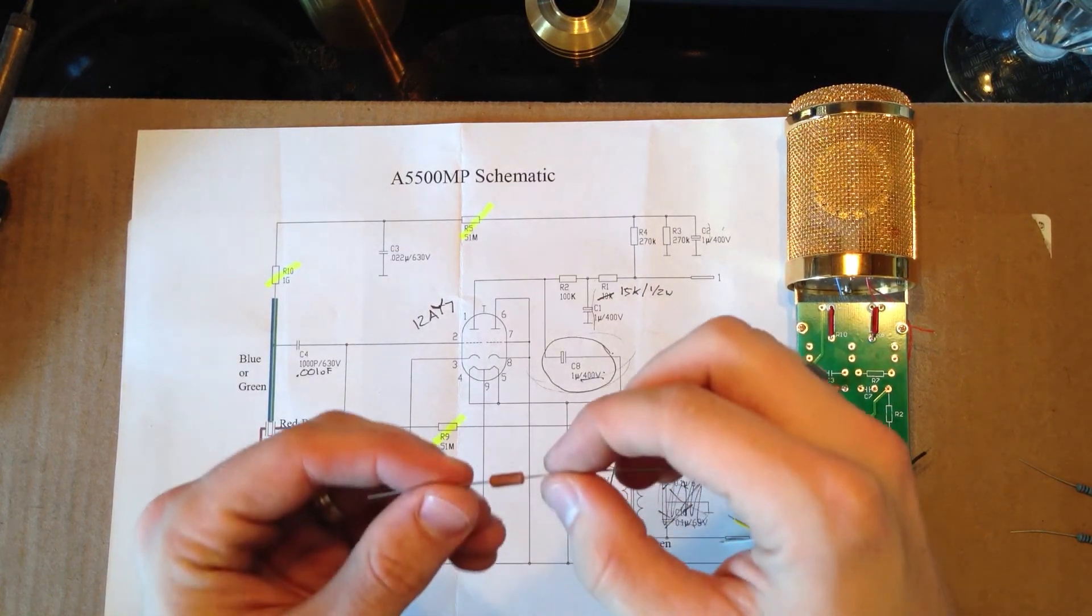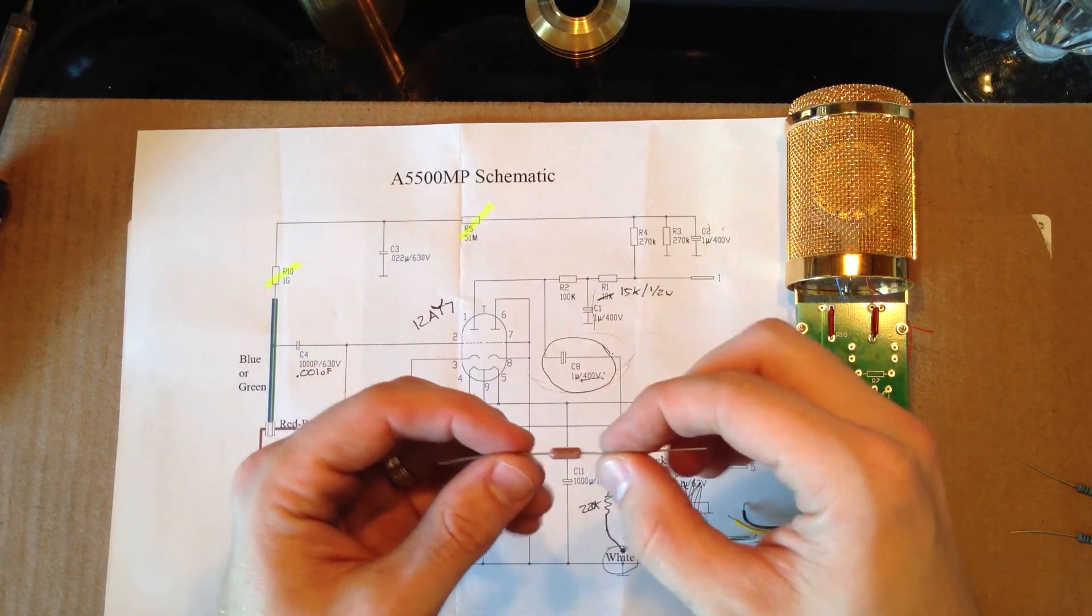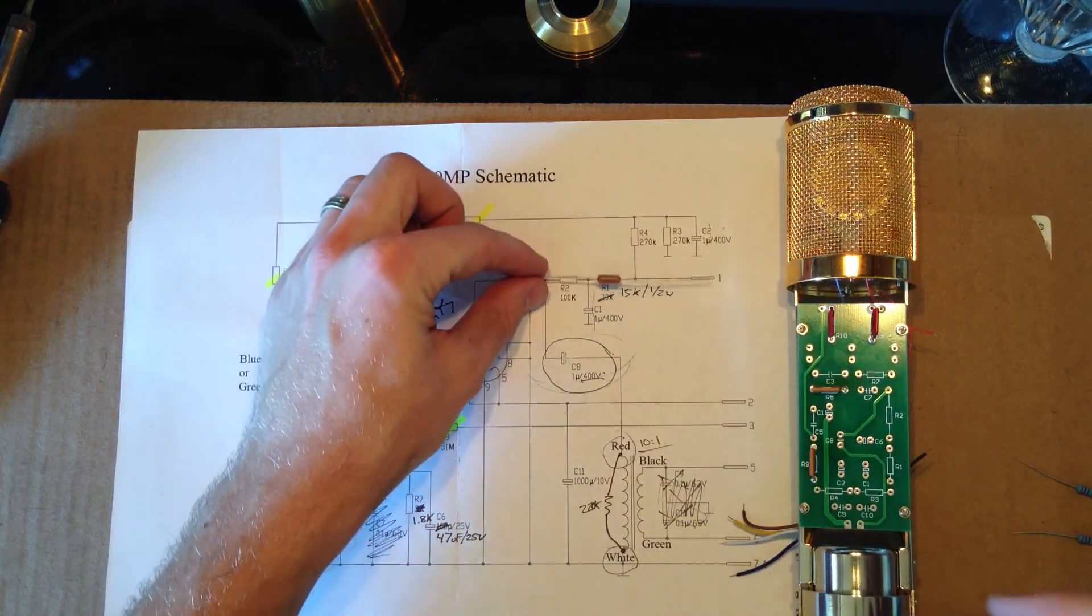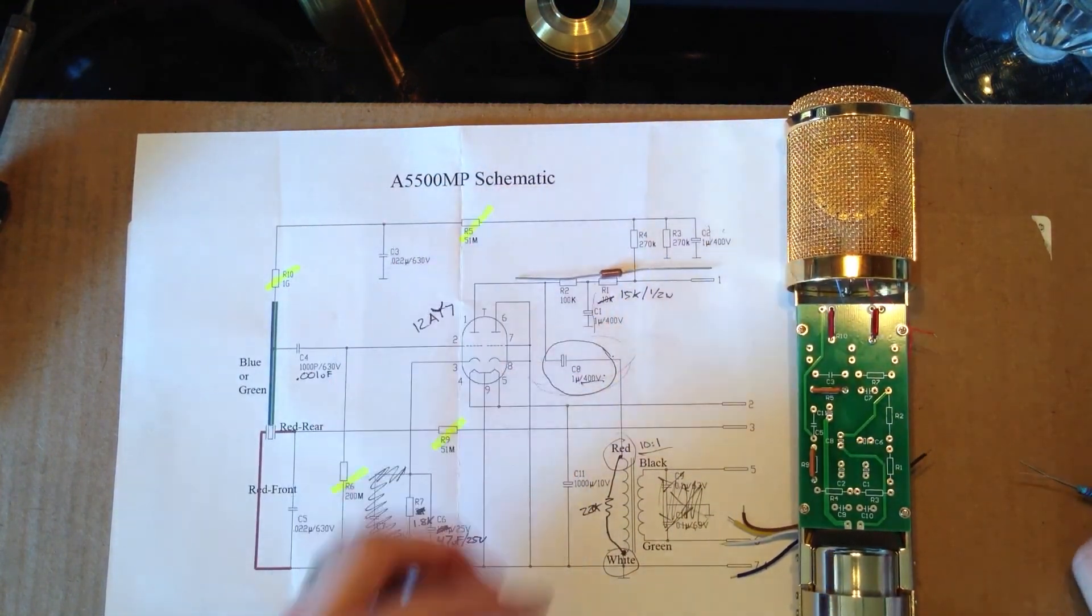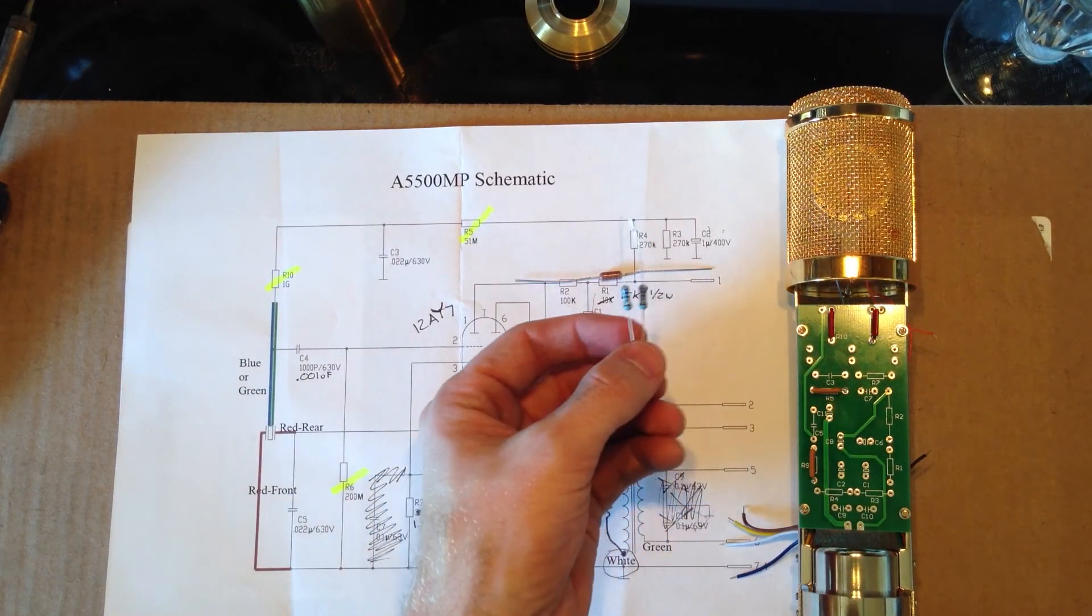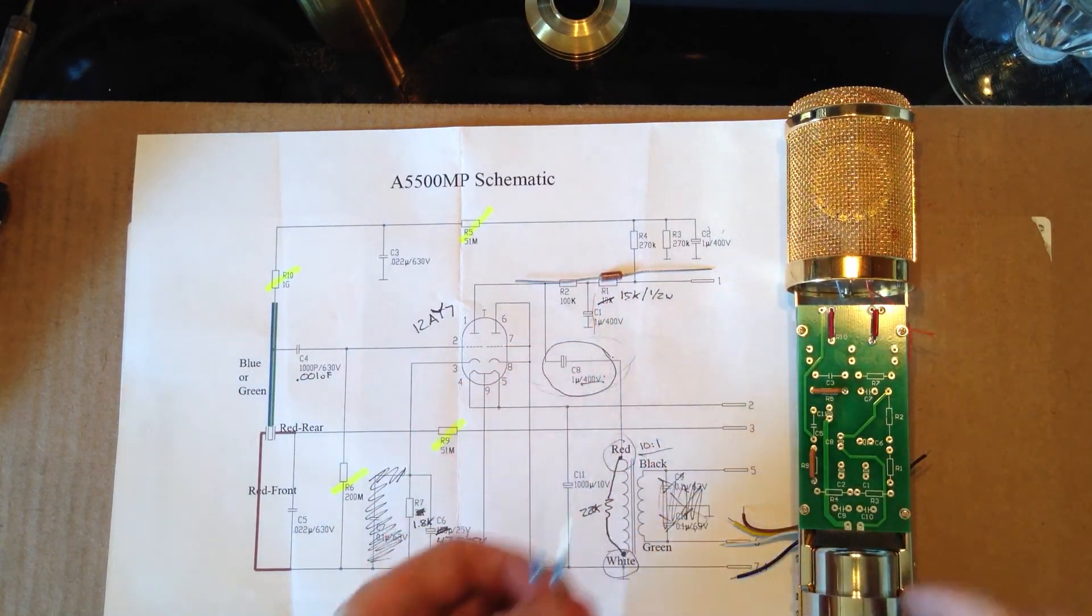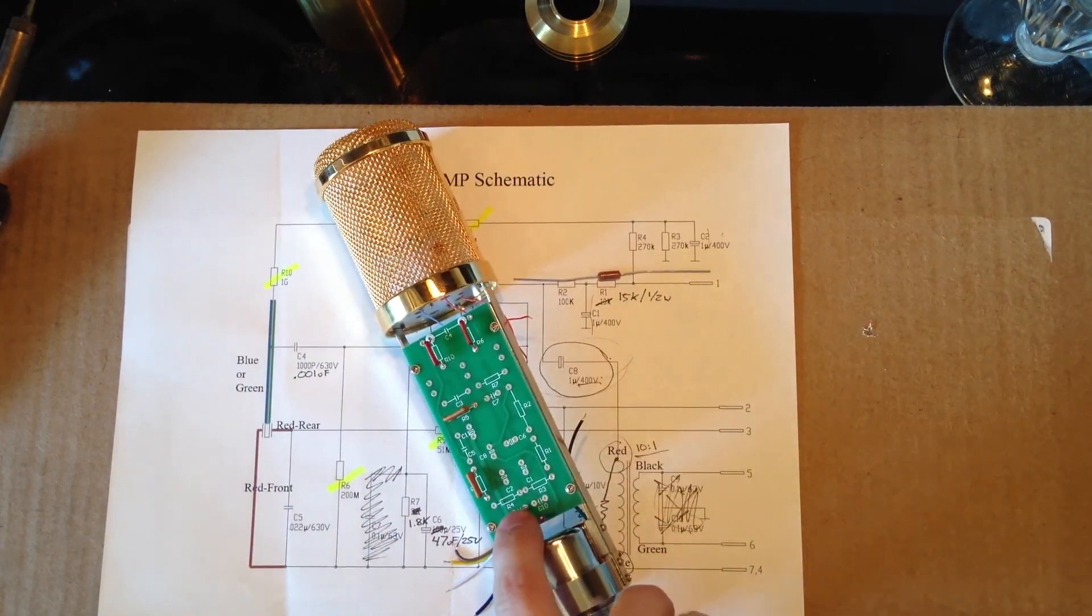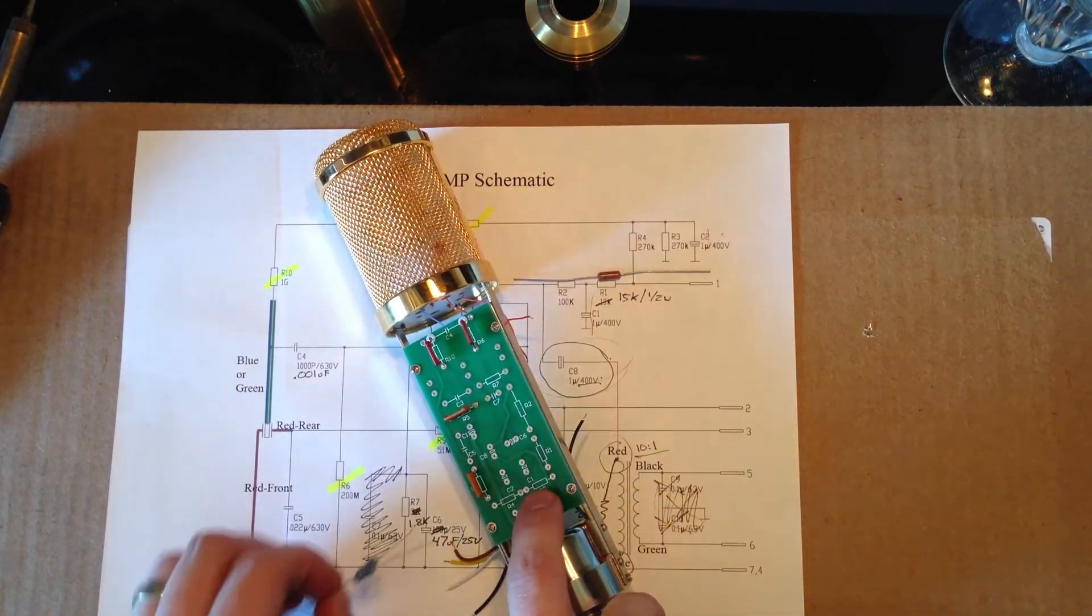Next, I have a mil-spec 15K half-watt resistor. This is R1. And then I have two resistors. These are the 270K for R3 and R4. So we'll grab the microphone, and we can see here that R3 and R4 are right down here.